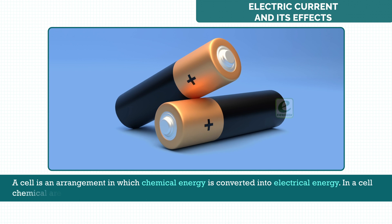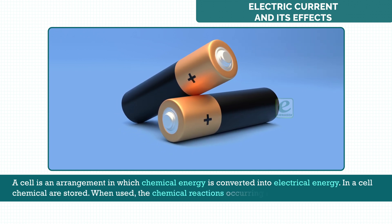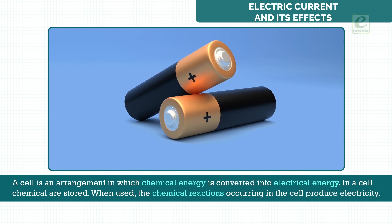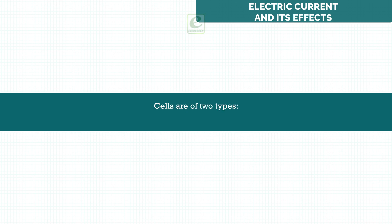In a cell, chemicals are stored. When used, the chemical reactions occurring in the cell produce electricity. Cells are of two types: primary and secondary.